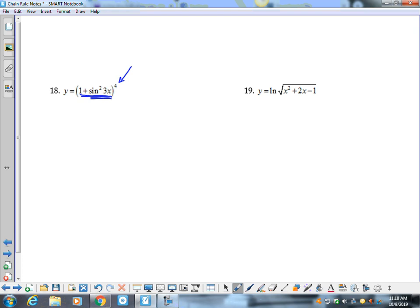So guys, this is a chain rule within a chain rule. So your outer function is the fourth. That's the big turkey. So I'm going to do four to the third. So that's your outer layer. That's your turkey.